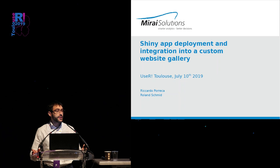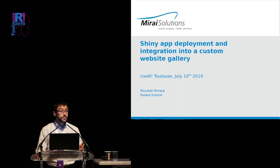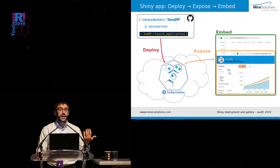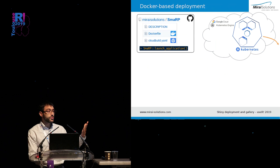Today I'd like to share some work we have done earlier this year in the area of deploying Shiny apps and creating a custom website gallery. In particular, I will be showing how we have made SMARP, a Shiny app developed as an R package on GitHub, how it made its way to the cloud — specifically a Kubernetes cluster — and from there it has been exposed to be finally embedded in the gallery of our website.